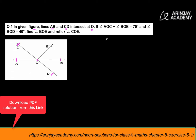If angle AOC, which is this angle, plus angle BOE — which is this angle — is equal to 70 degrees. So you are told that the sum of angle AOC plus angle BOE is equal to 70 degrees.